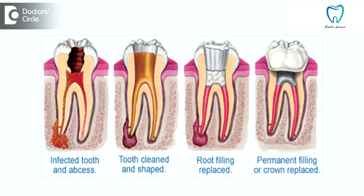Whenever we are removing the extensive carious lesion, in order to maintain the size, shape, strength, and appearance of the tooth, we have to place a good crown over it. This crown will provide all the necessary support for the tooth and will give you a good prognosis so that the tooth is going to last for a long time.